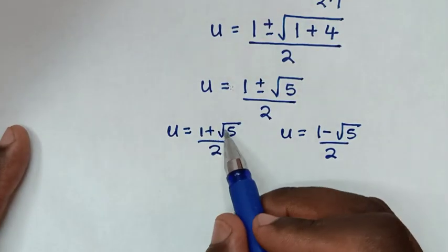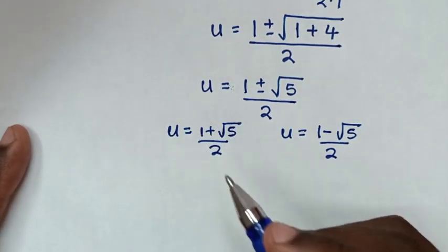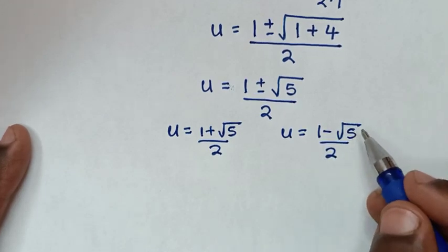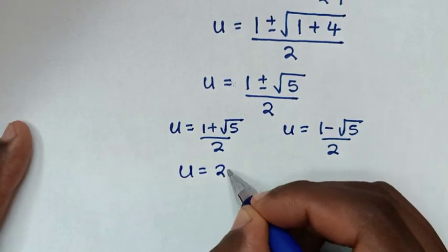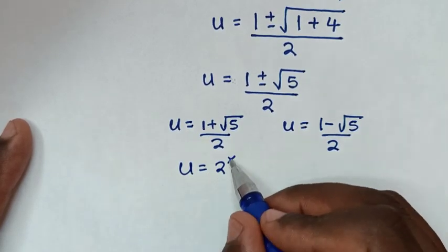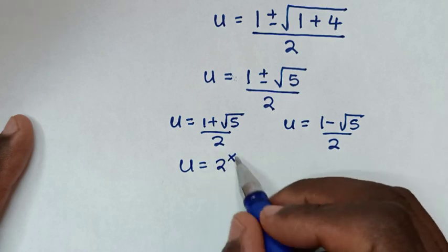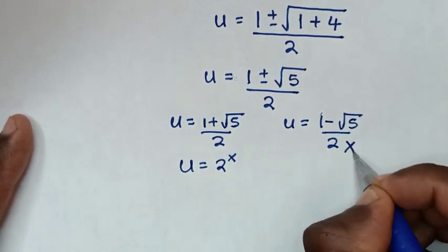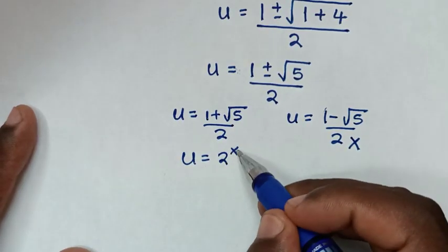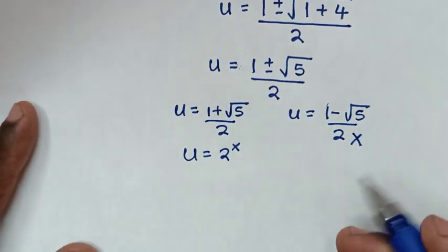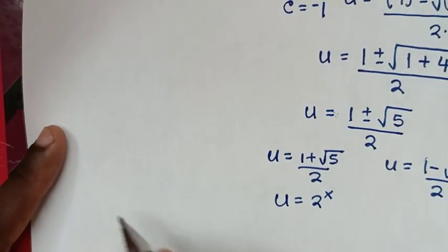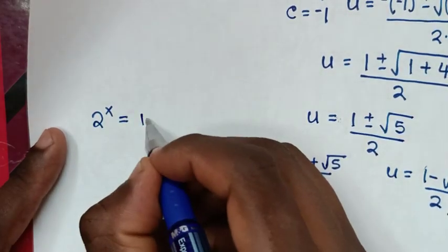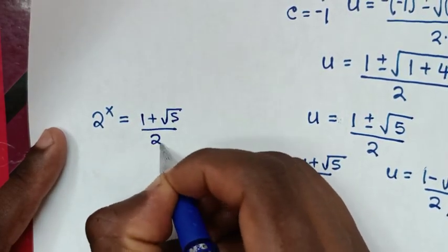The first value of u is positive, and the second value of u is negative. Since u equals 2 power x, and 2 to the power of any number is always greater than 0, the negative value is rejected. We continue with 2 power x equals 1 plus square root of 5 over 2.